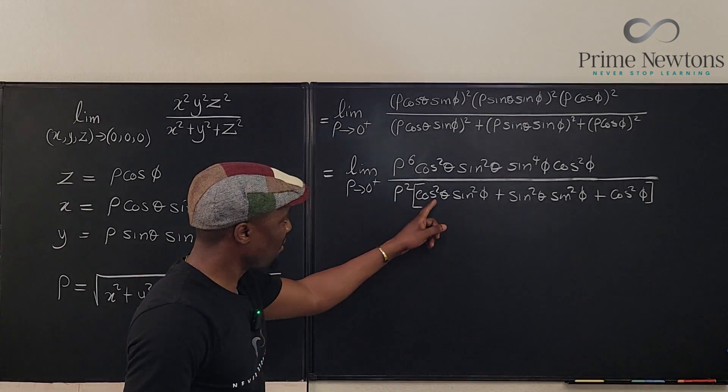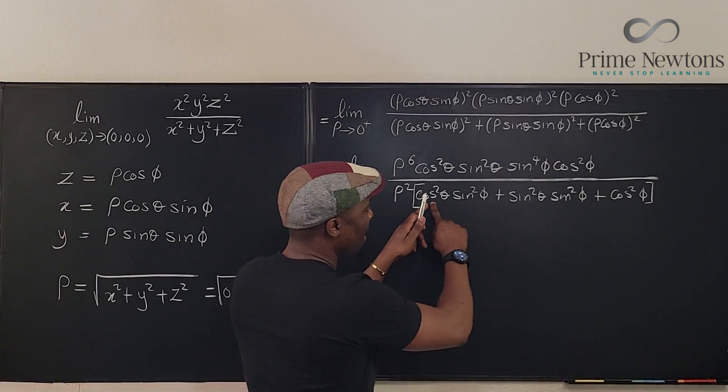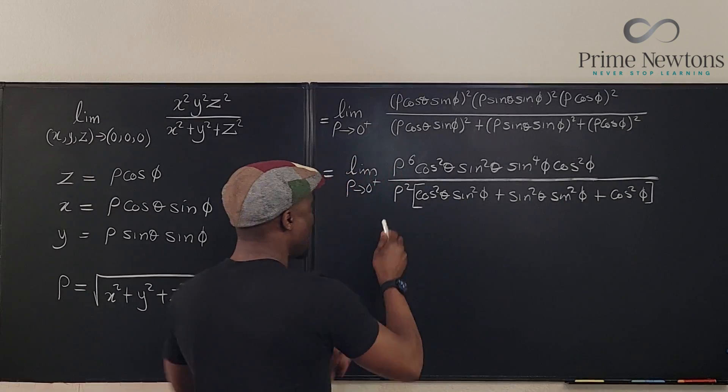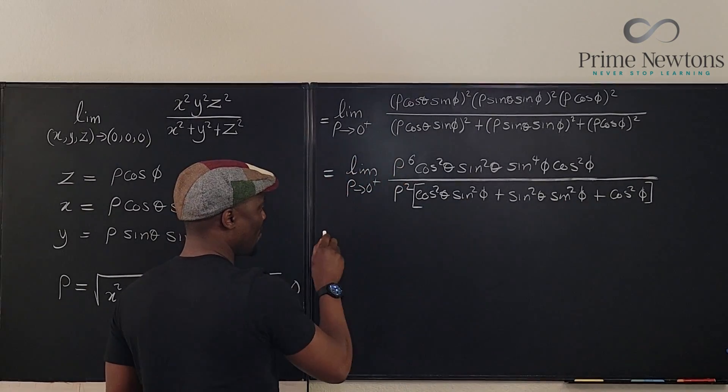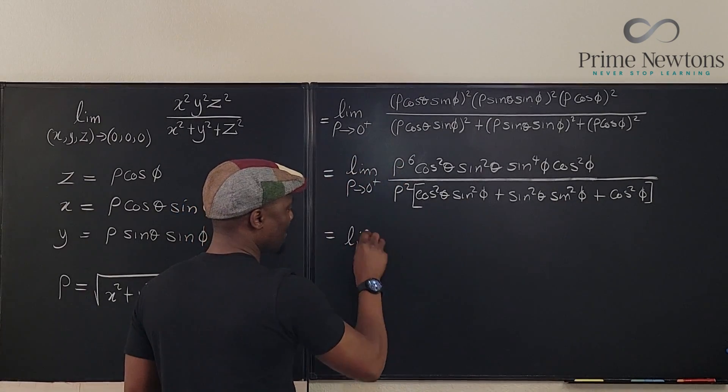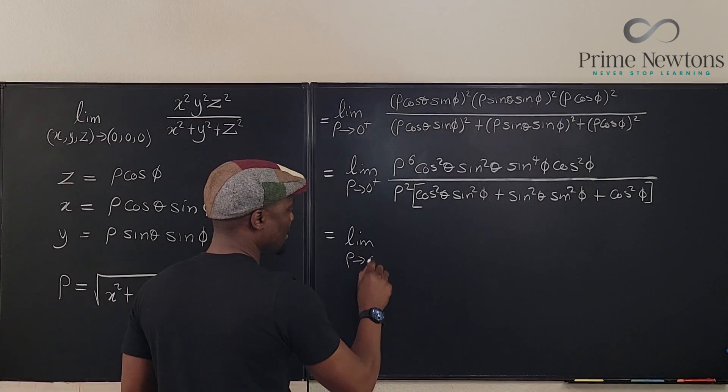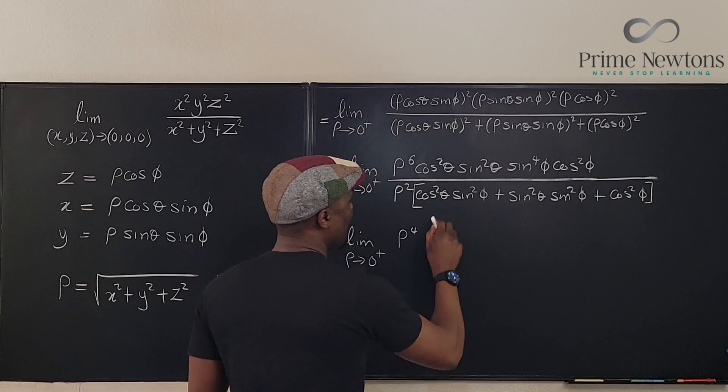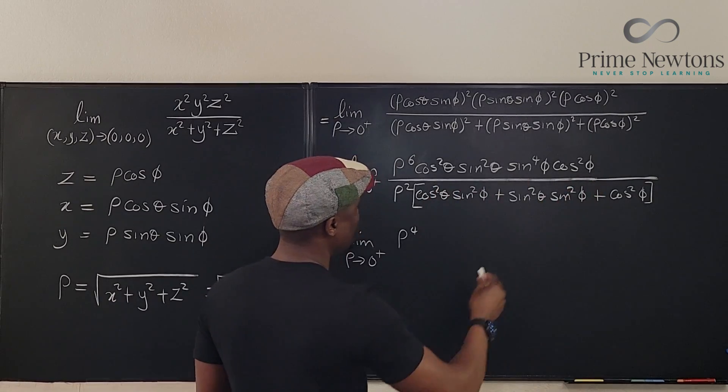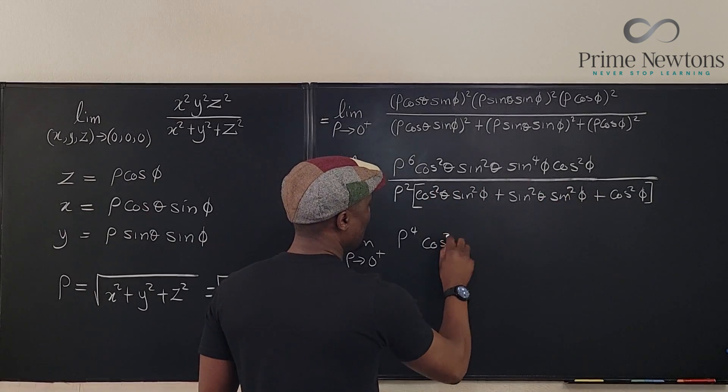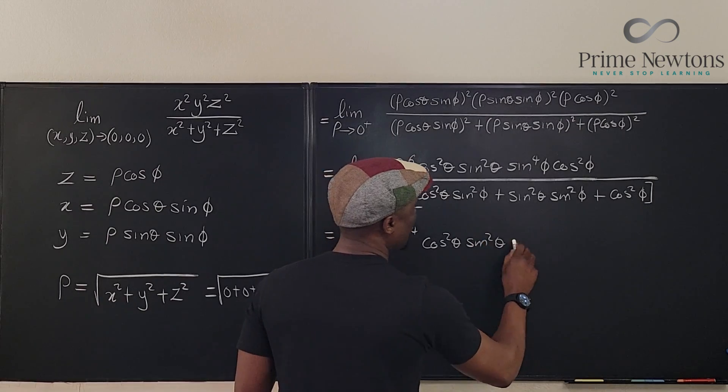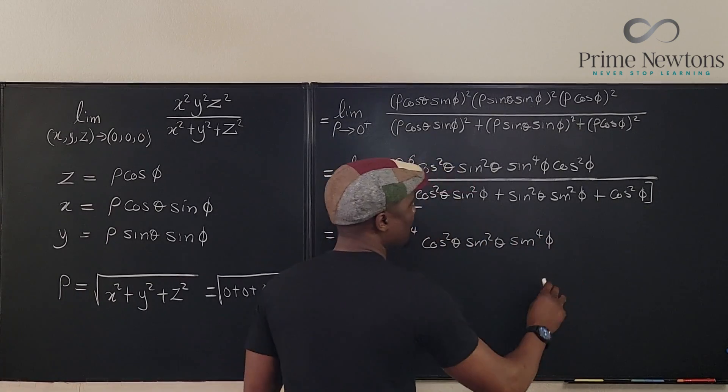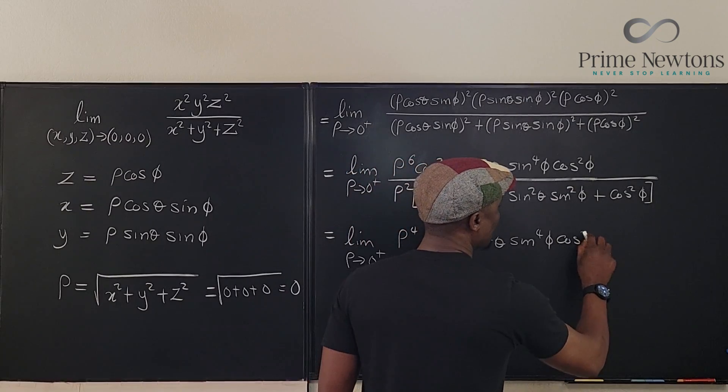So is there any simplification in the bottom? Cosine squared theta plus sine, oh, the two of them have this in common. So we can factor that out. And then we can cancel this so that what we have is the limit as rho approaches zero from the right of, this is going to be rho to the fourth. And nothing simplifies here. We're still going to have cosine squared theta, sine squared theta, sine to the fourth of phi, cosine squared phi.